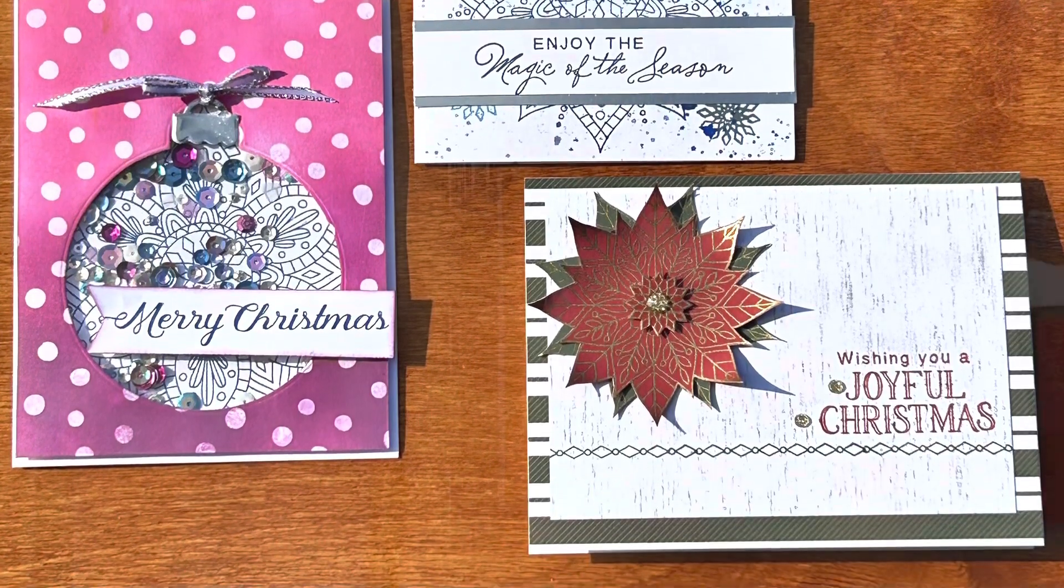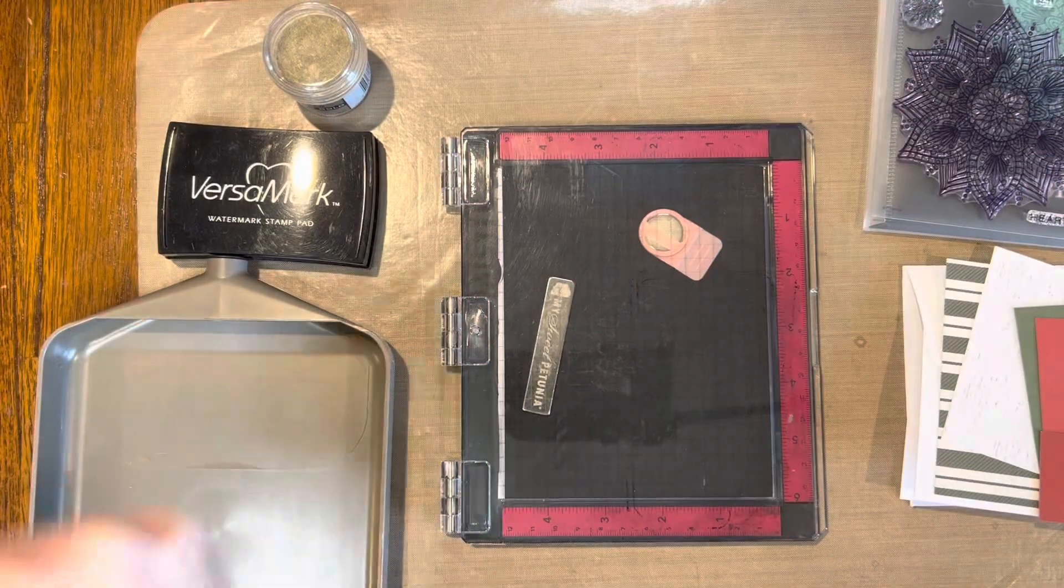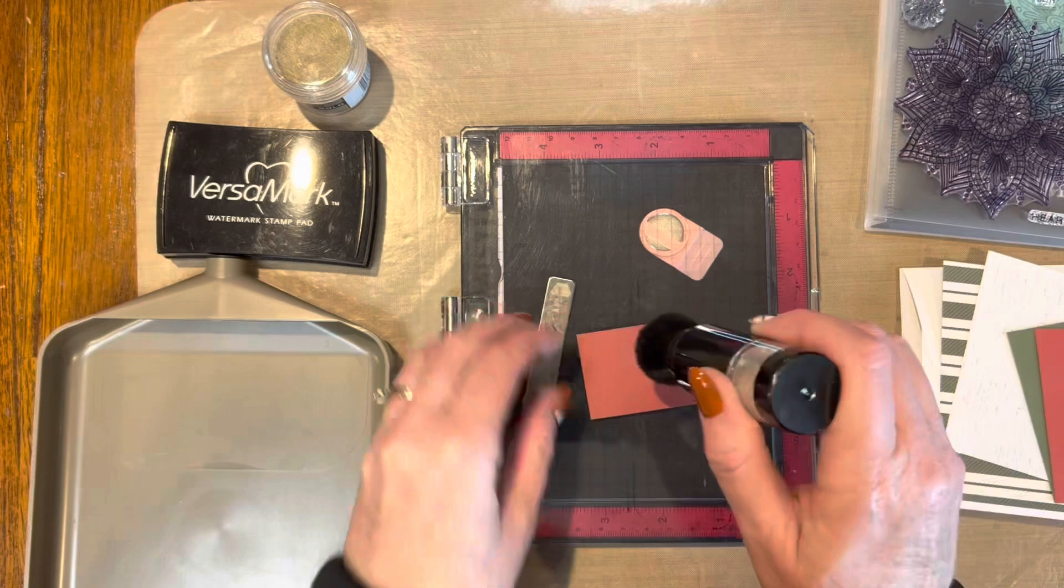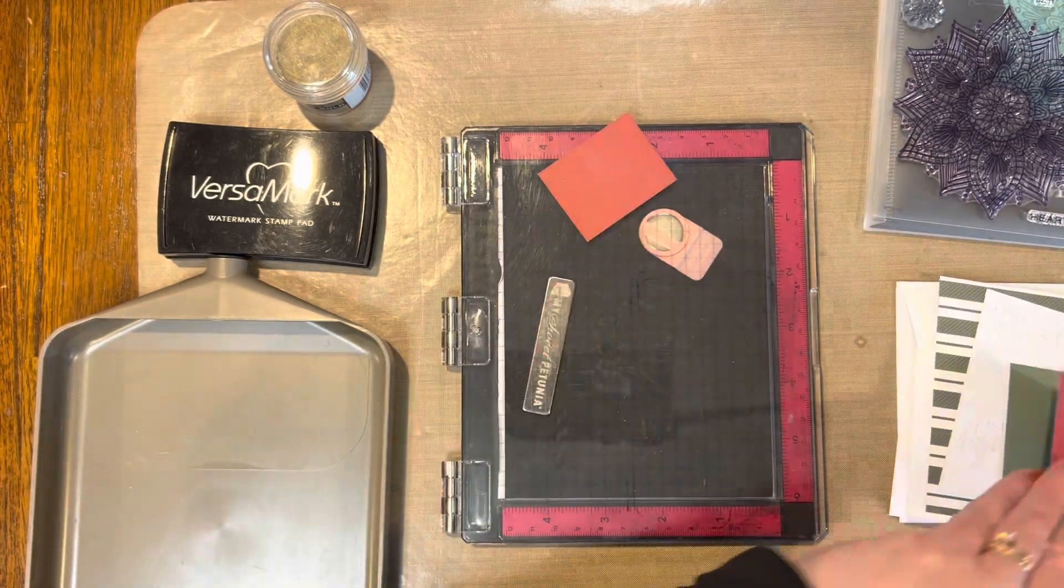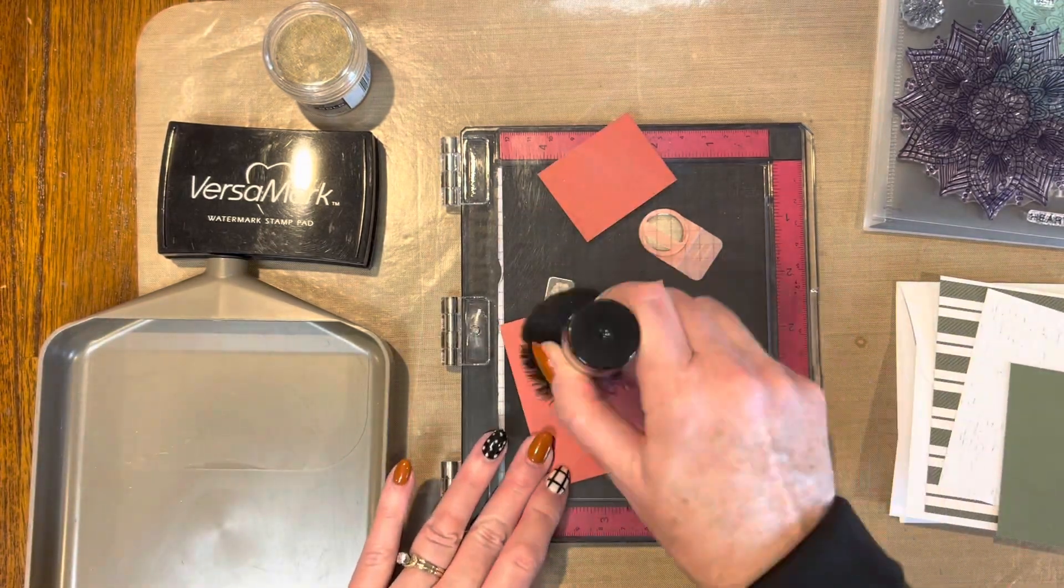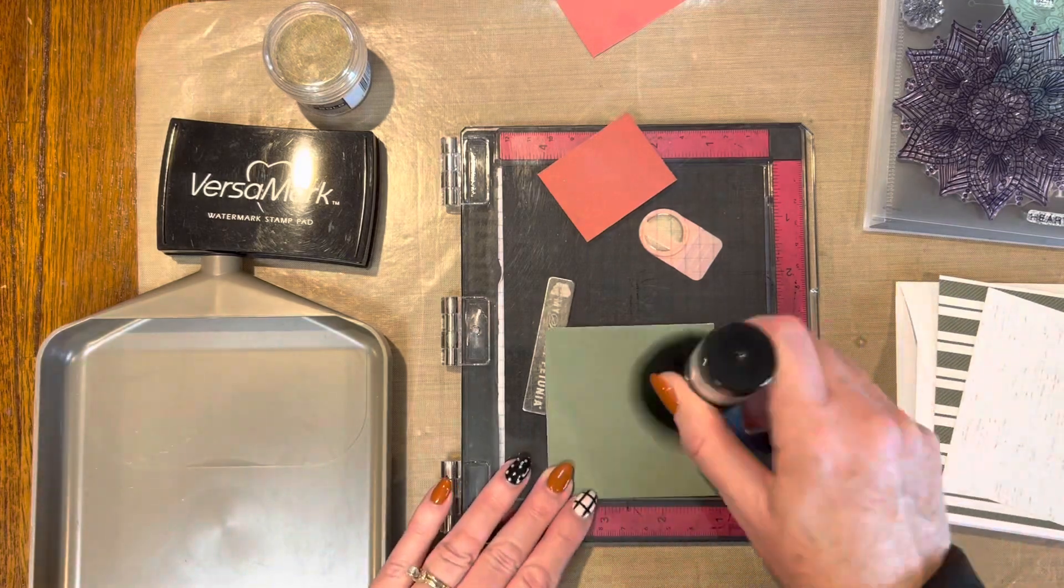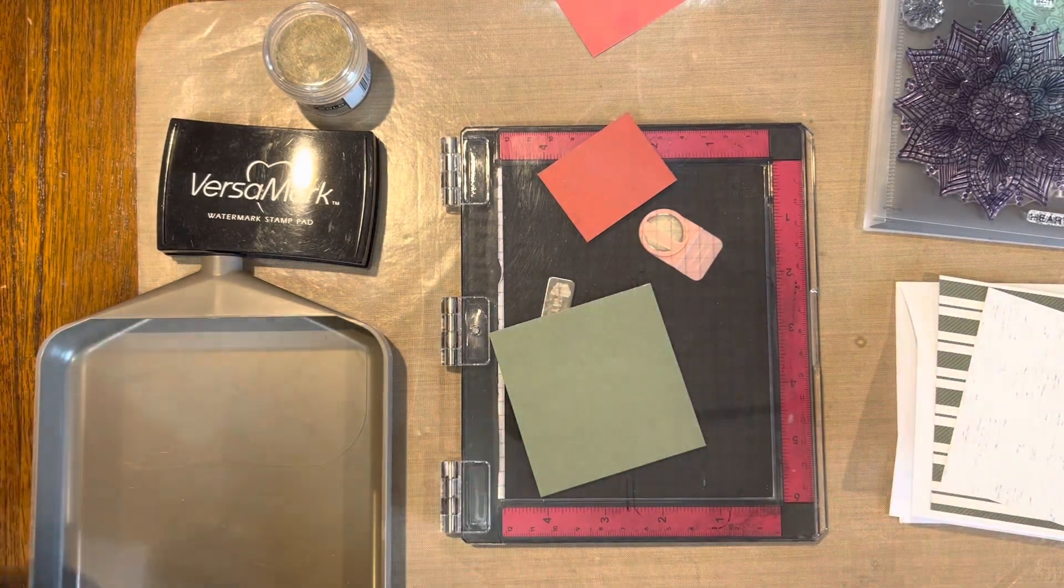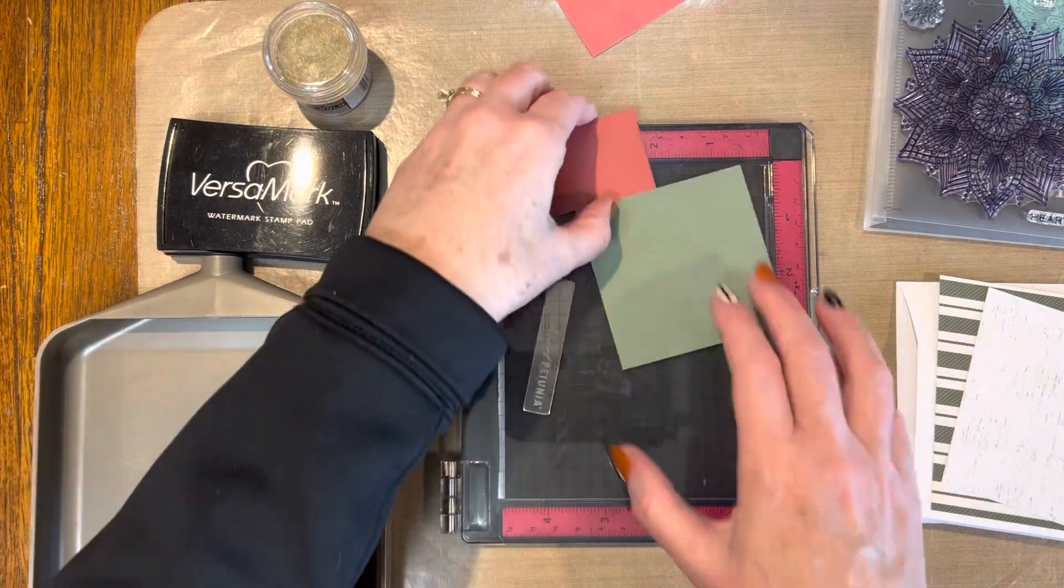There you'll see the three cards. We are going to start off prepping some cardstock. I'm doing the light side of the scarlet and the light side of the pine cardstock.